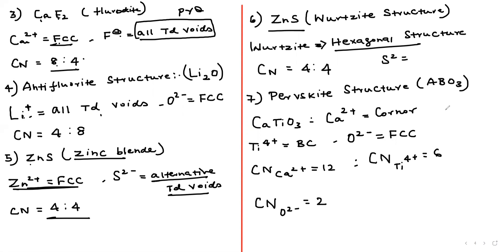For zinc sulfide (ZnS), it exists in two forms: zinc blende, where Zn²⁺ occupies an FCC lattice; and wurtzite, where Zn²⁺ occupies a hexagonal lattice. The coordination number in both cases is 4:4.